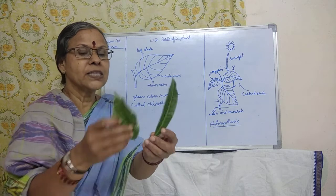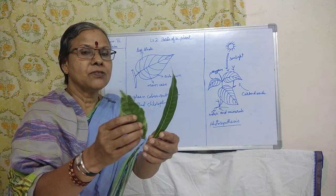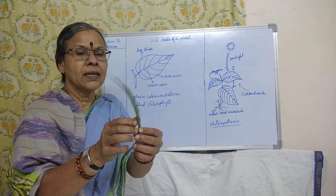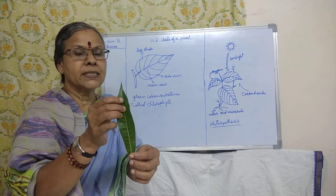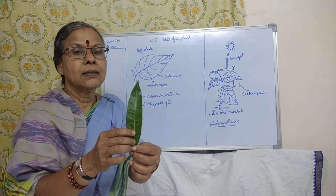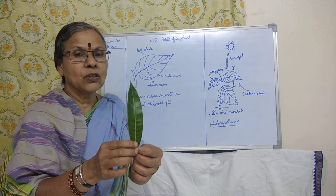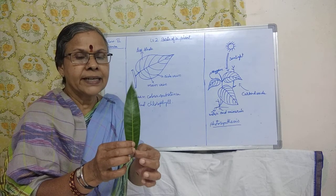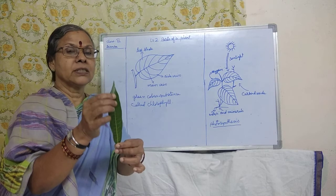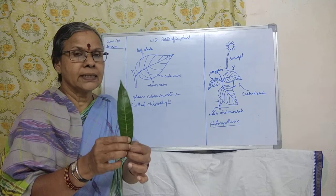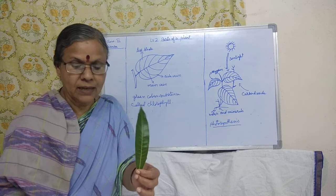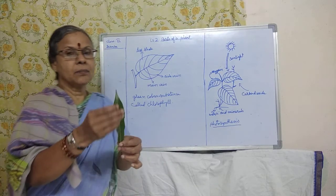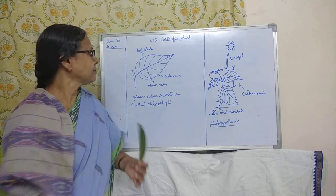All the leaves are which color? All the leaves are green. Do you know why these leaves are green in color? Because a substance present in the leaf is called chlorophyll. Chlorophyll gives the leaves their green color. That is why, because this chlorophyll is present in the leaf, the leaves are green in color.